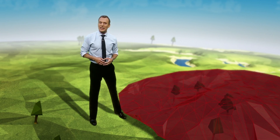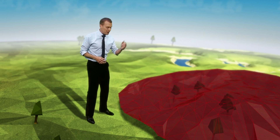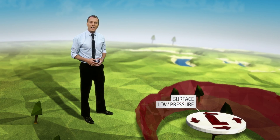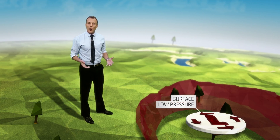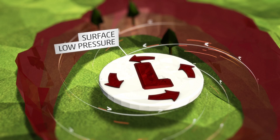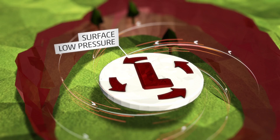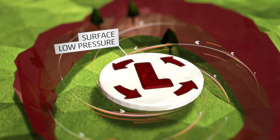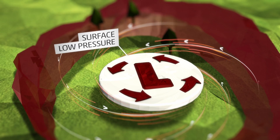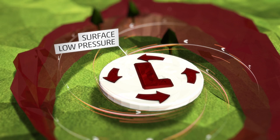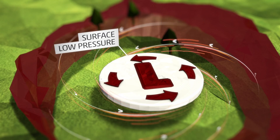The other way we can get lift in the atmosphere is by generating a surface low pressure. The air flow around low pressure is inward and counterclockwise — warm moist converging air that then has to go somewhere.